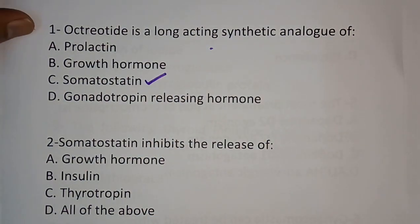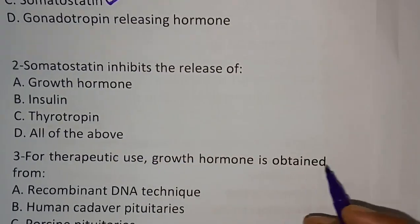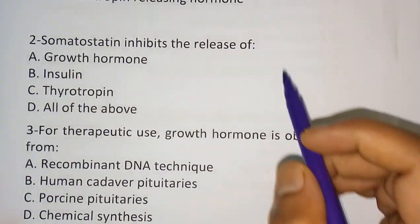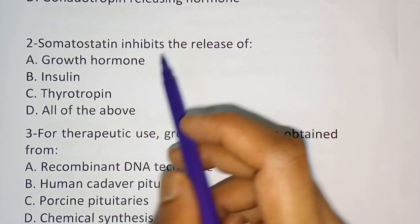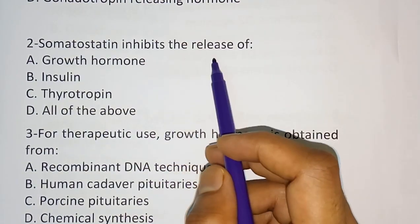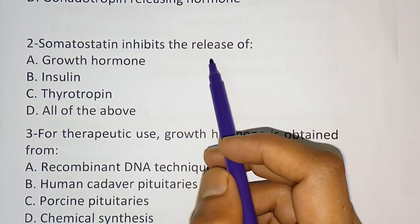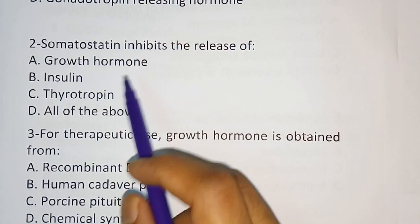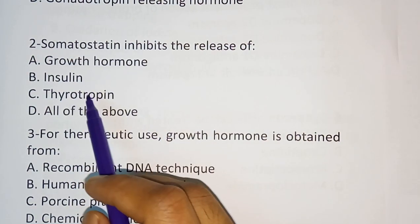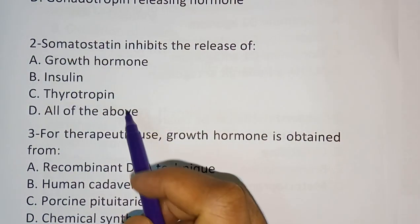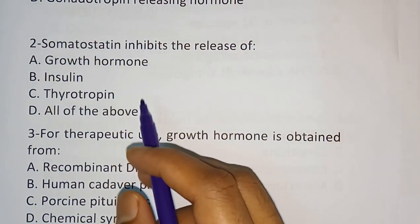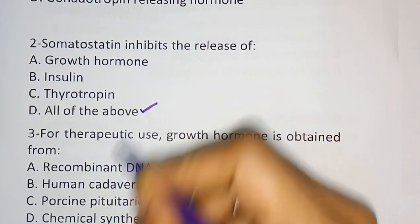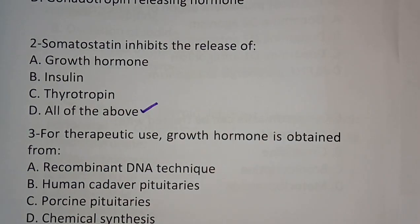Question number two: Somatostatin inhibits the release of — options are growth hormone, insulin, thyroid hormone, or all of the above. The correct answer is option D, all of the above.